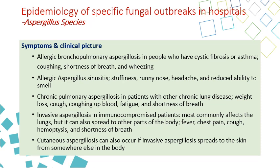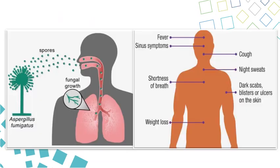Invasive aspergillosis in immunocompromised patients is a serious disease most commonly affecting the lung, but it can spread to other body sites and cause fever, chest pain, cough, hemoptysis, and shortness of breath. Cutaneous aspergillosis can also occur if invasive aspergillosis spreads to the skin from elsewhere in the body. Aspergillus spores are carried from construction sites and defective air conditioning through the air, then inhaled by the patient.